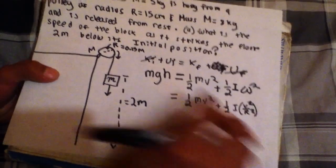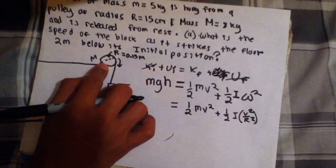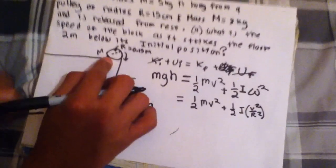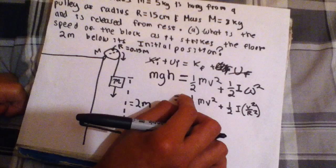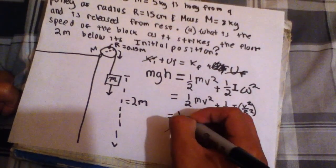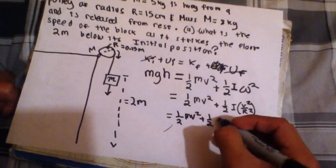And then it's being squared. And then for I, for this particular item, which is a disc, it's gonna be one half M R squared. So we're gonna play that in for I.